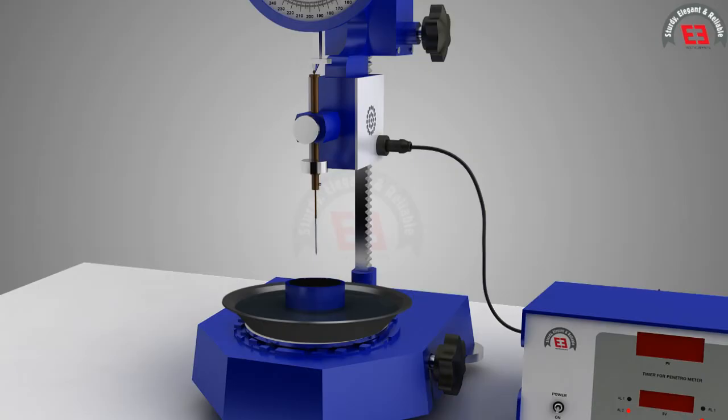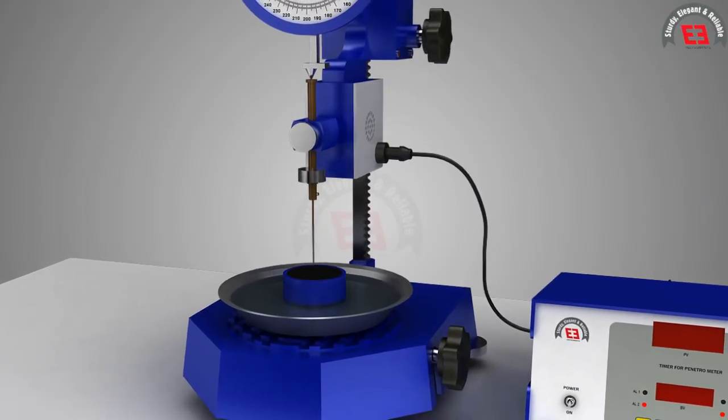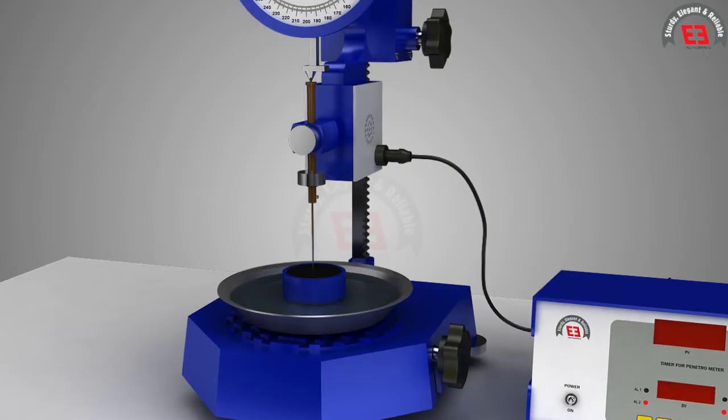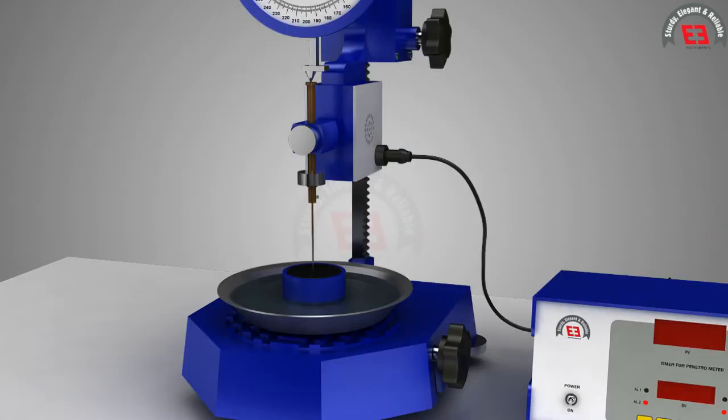Also at this time, room temperature is maintained at 25 degrees Celsius. Using the adjusting screw, the needle assembly is lowered and the tip of the needle is made to just touch the top surface of the bitumen sample and the needle assembly is clamped in this position.